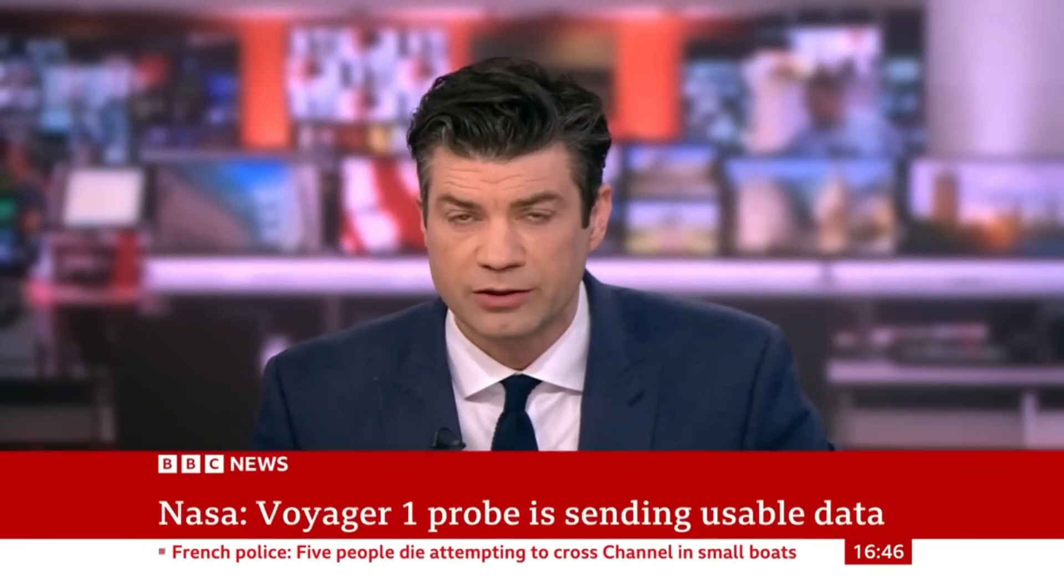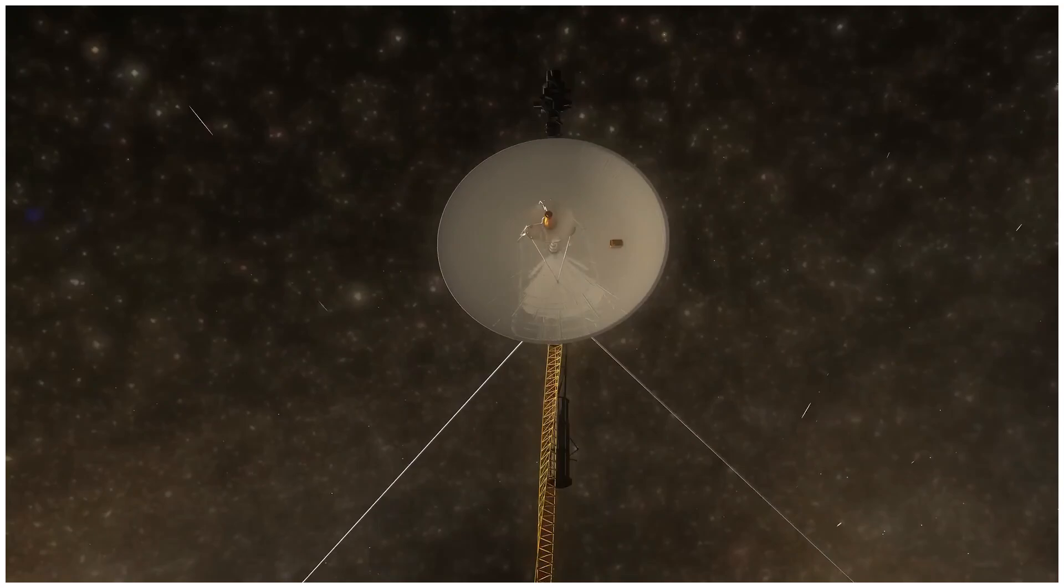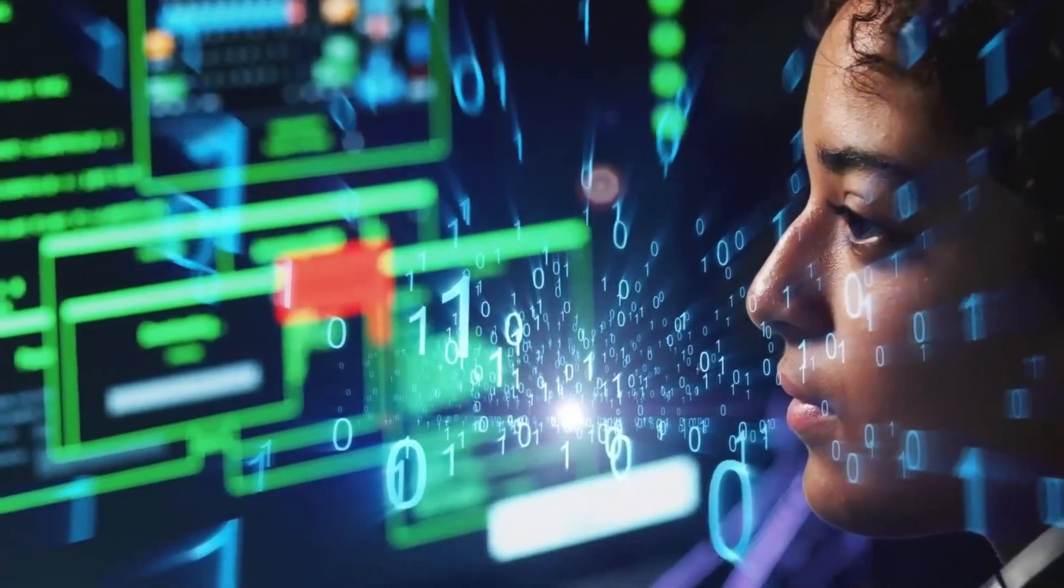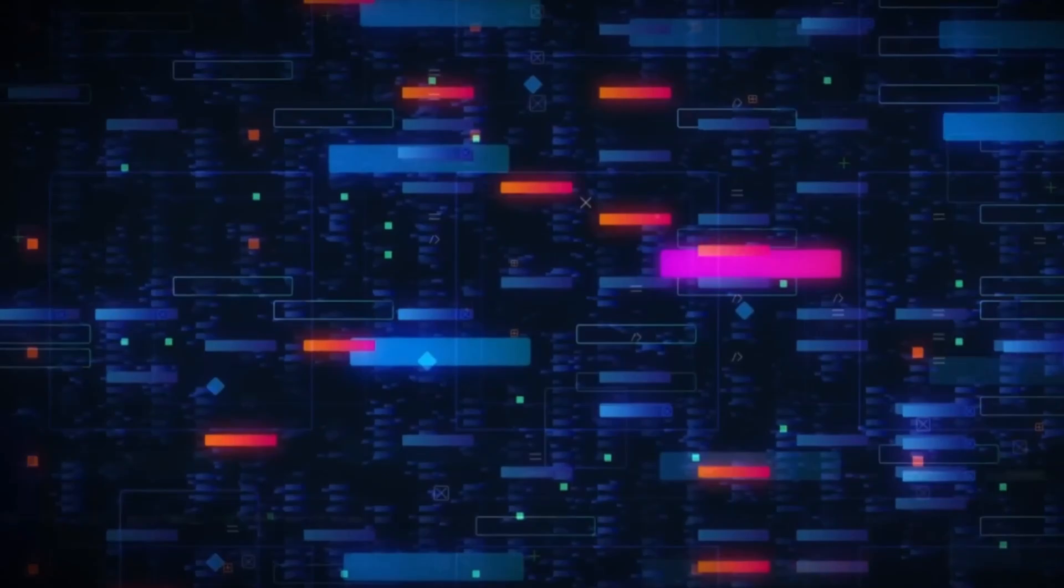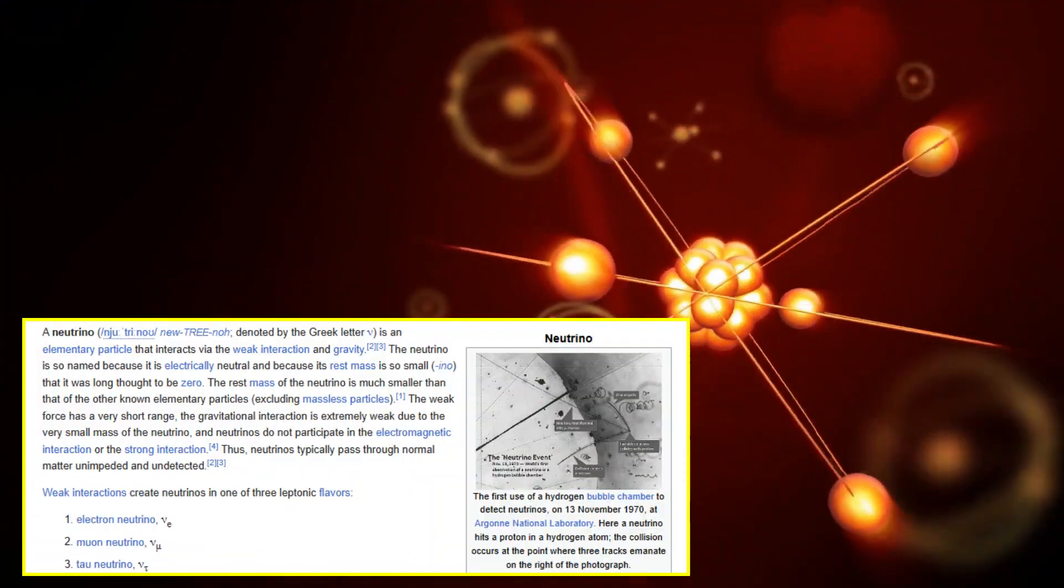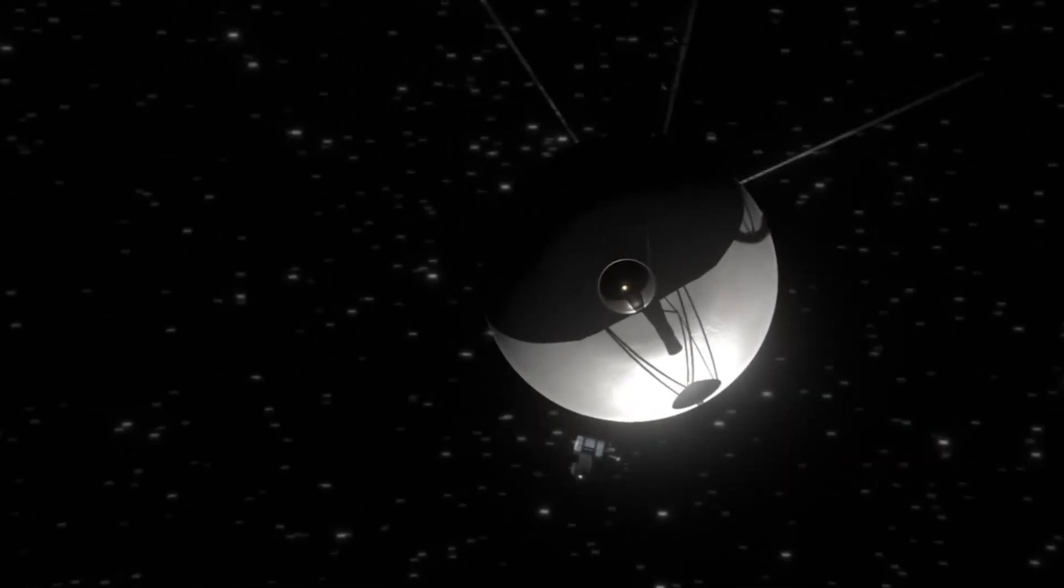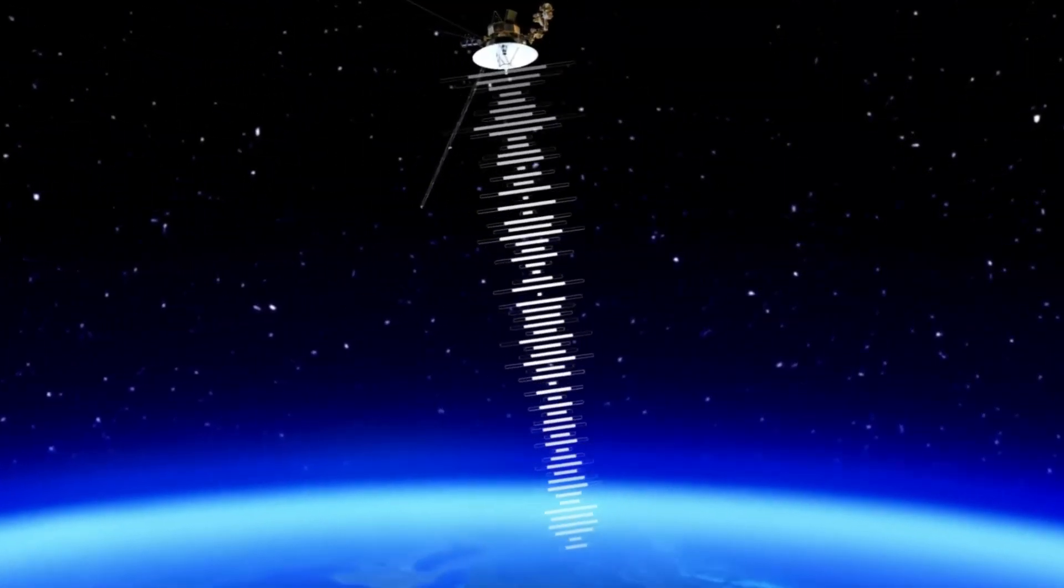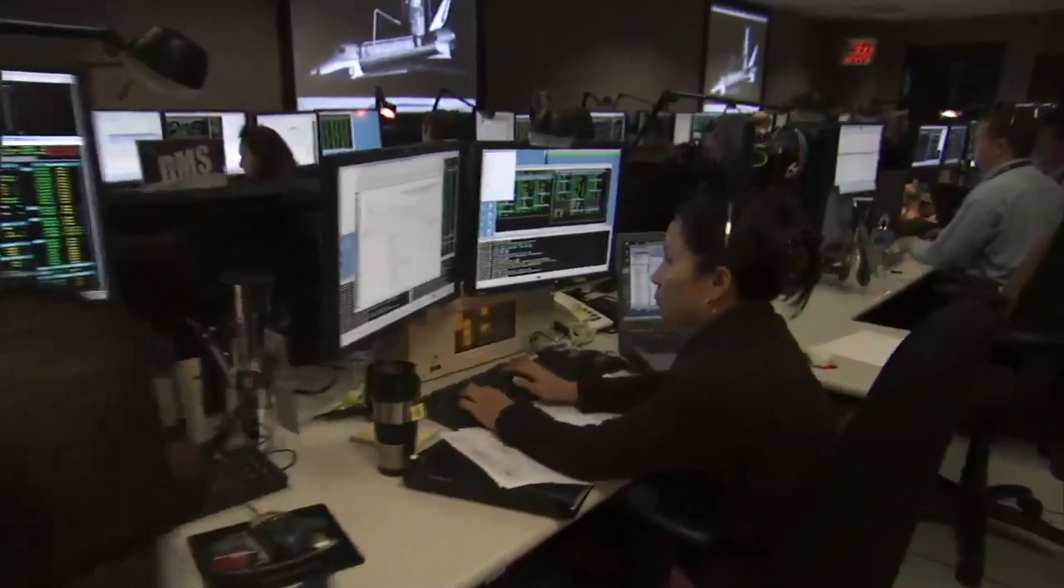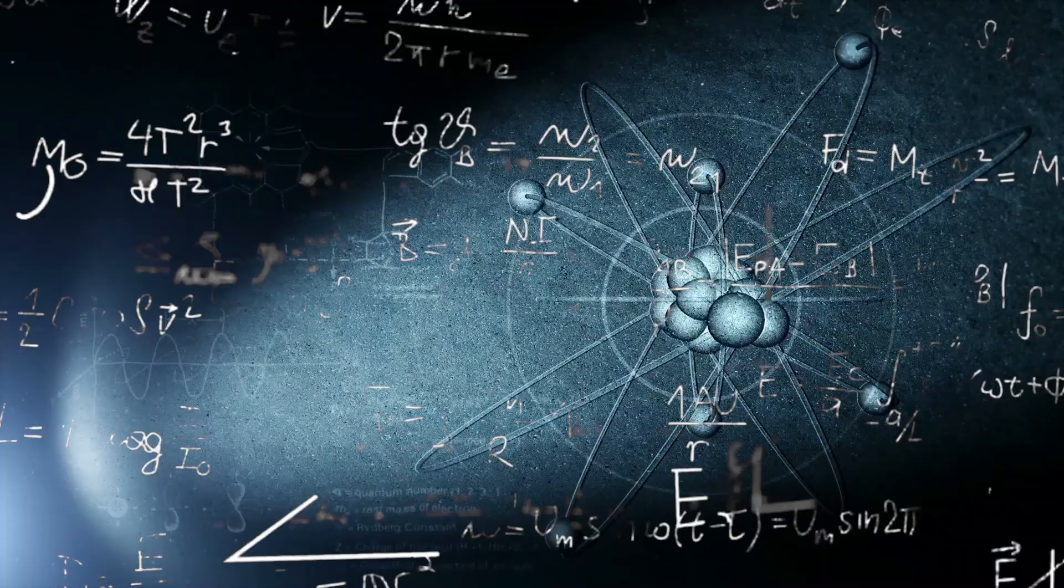The most distant human-made object in the universe is sending usable information to Earth again. Voyager 1's latest transmission has left scientists in shock. Buried within the data was something that shouldn't be possible: a structured neutrino pattern. Neutrinos are nearly undetectable, and Voyager 1 has no instruments capable of detecting them. Yet the signal wasn't random noise. It followed a precise repeating sequence.